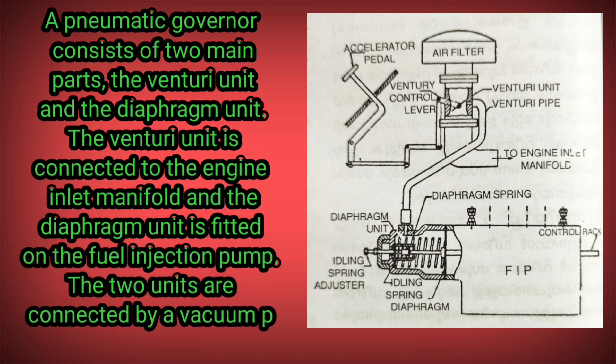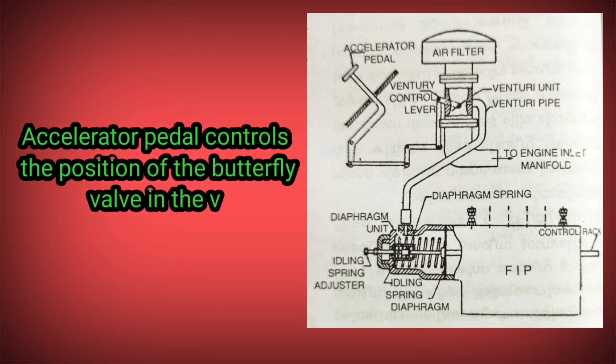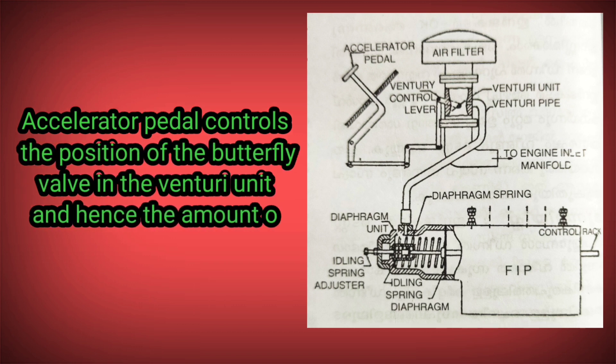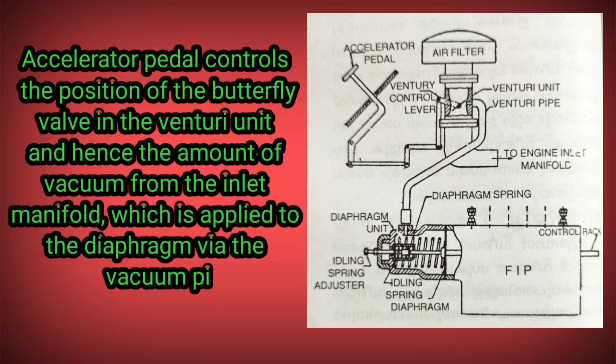The accelerator pedal controls the position of the butterfly valve in the venturi unit and hence the amount of vacuum from the inlet manifold which is applied to the diaphragm via the vacuum pipe.